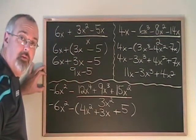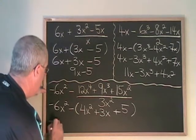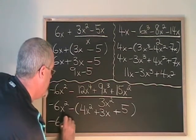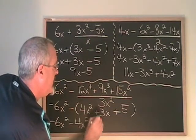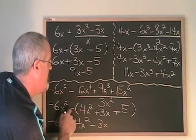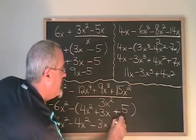Now, remove the bracket and fix the signs. Minus 6x squared minus 4x squared. Minus plus means minus 3x. Minus plus means minus 5.